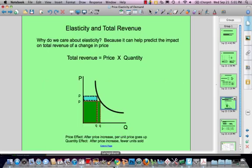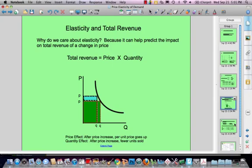We talked about the price effect and the quantity effect. So price effect says after a price increase, per unit price goes up. The quantity effect says after a price increase, fewer units are sold. Well, these are called countervailing effects. Price effect meaning higher unit price. Quantity effect meaning fewer quantity sold.